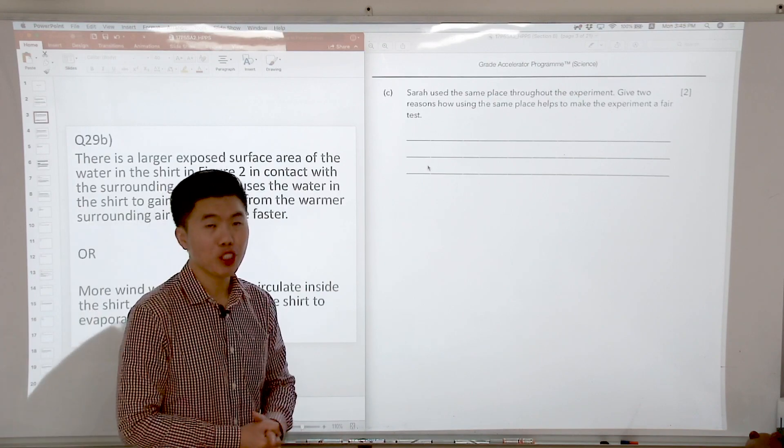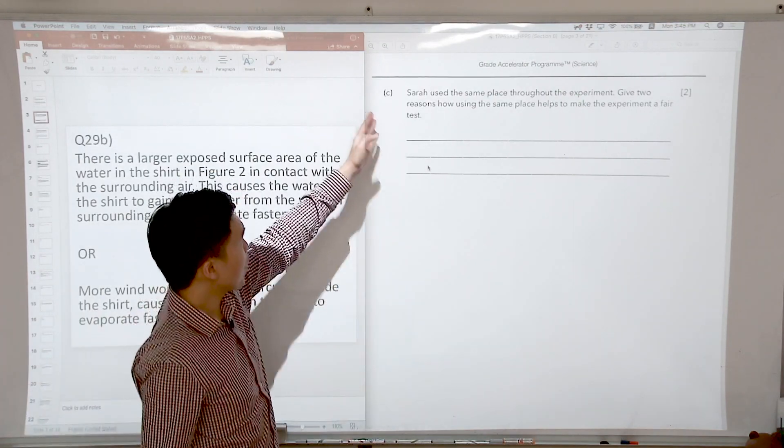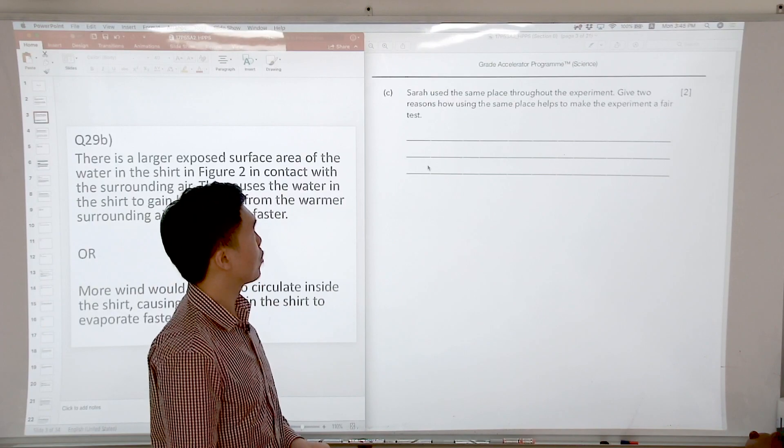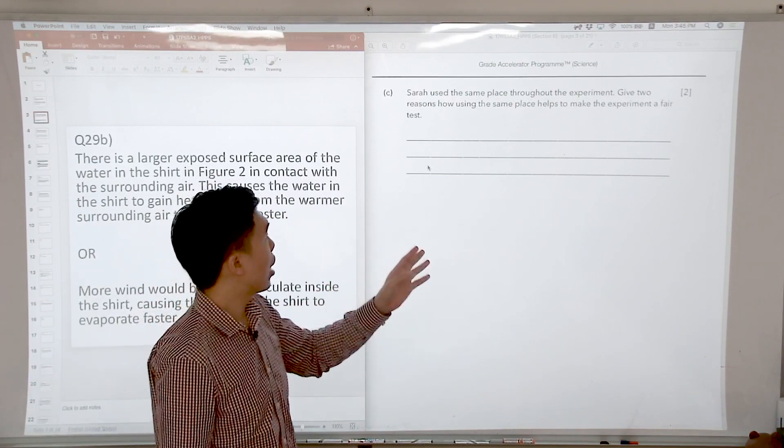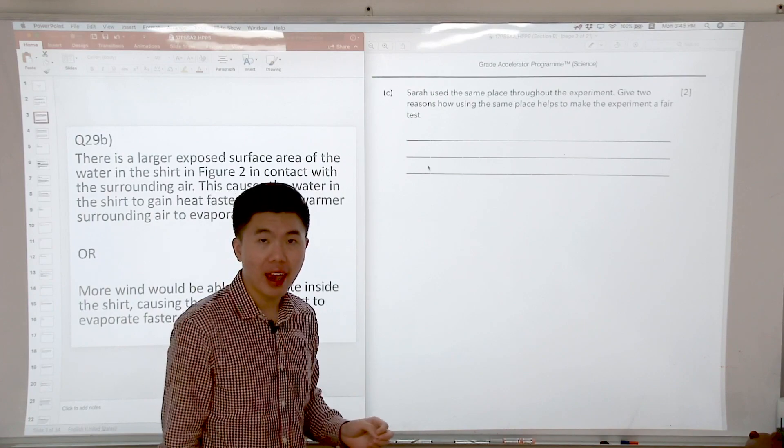Okay, so now let us look at question 29c. Sarah used the same place throughout the experiment. Give two reasons how using the same place helps to make the experiment a fair test.